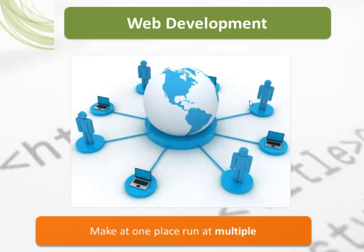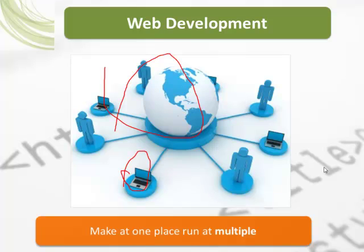Web development is based on the concept of 'make it in one place and run it at multiple places.' Your code generally lives on a central server, which is then accessed by multiple clients. As you can see in the image, there is a central server and multiple clients. When you make a change, you change it at the central server and it is reflected on every other computer.